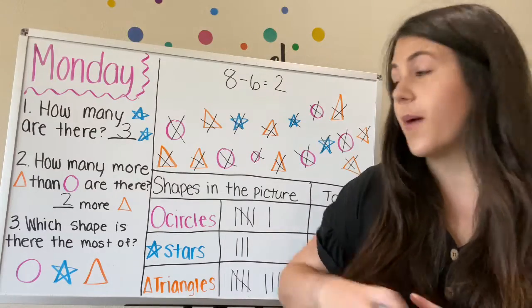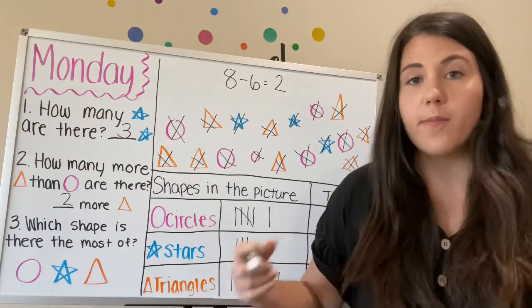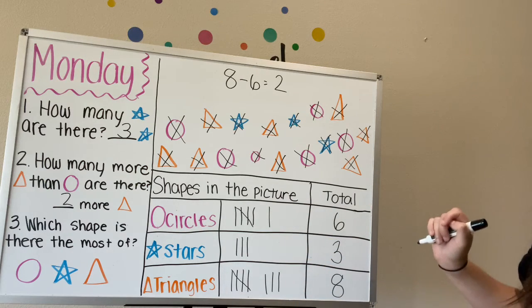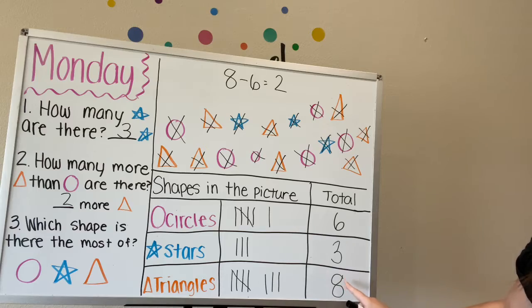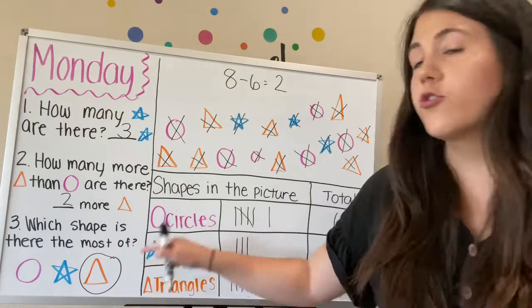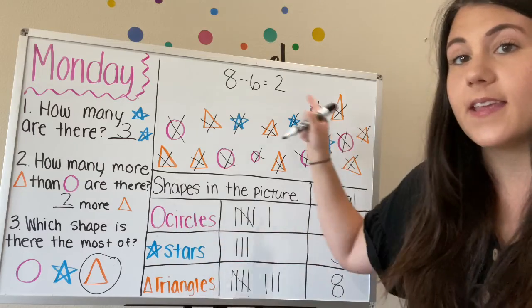And last one, number three, which shape is there the most of? So we're looking at our tally chart. We're looking at our totals. Which one is the greatest number? Eight. And that corresponds with triangles. So triangles is the shape that we see the most.